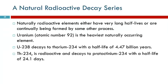Naturally radioactive elements either have a very long half-life for them to still be around, or they are formed by something else decaying. A lot of times when a radioactive isotope decays, it forms a different radioactive isotope. Uranium, with atomic number 92, is the heaviest naturally occurring element — there's nothing heavier that actually naturally occurs.